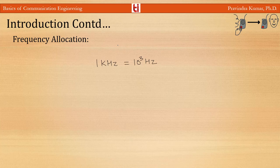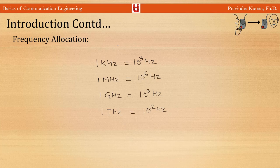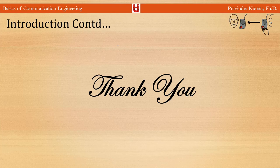For reference, the frequency unit conversions are: 1 kHz = 10³ Hz, 1 MHz = 10⁶ Hz, 1 GHz = 10⁹ Hz, and 1 THz = 10¹² Hz. This concludes the first lecture of the basics of communication engineering lecture series, covering the introductory part of communication. In the next lecture, we will discuss the elements of communication systems. Thanks for listening.